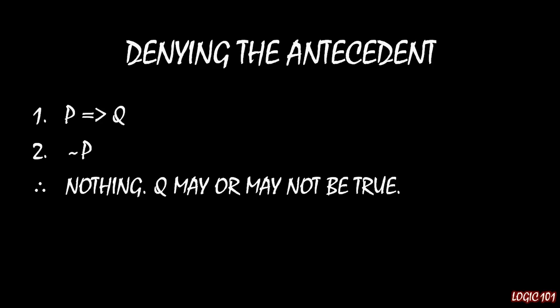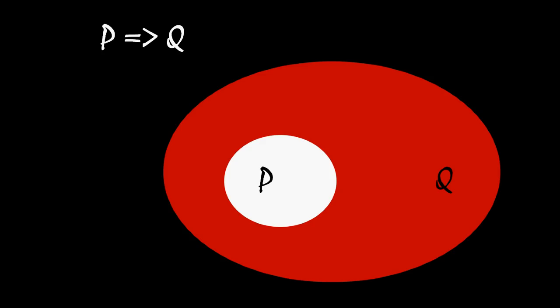This is fairly easy to see if you go back to the visual representation that we had last time. Remember that this is p implies q: we have that white circle p entirely housed inside of the red circle q, so if you're inside of p, you're inside of q. Denying the antecedent says that we know we're not in p. What does that tell us about q? Not much. We could be inside of q, or we could be outside of q. Just because we're not in p doesn't mean we're not in q.